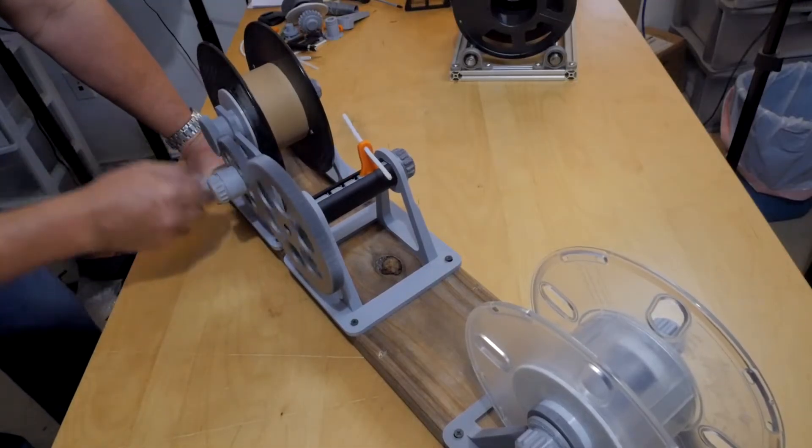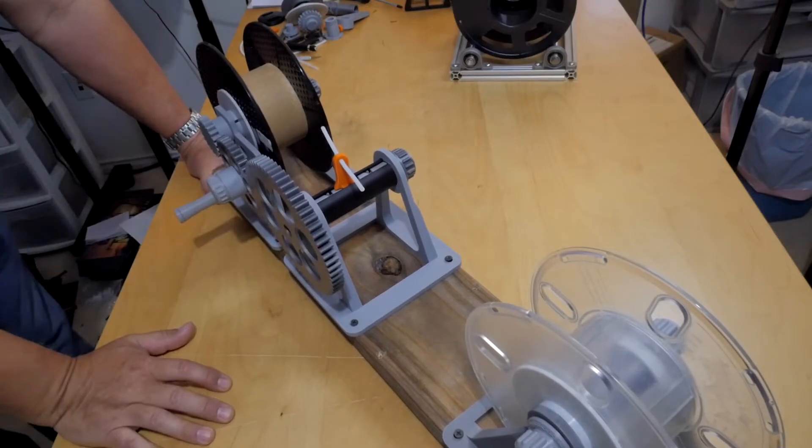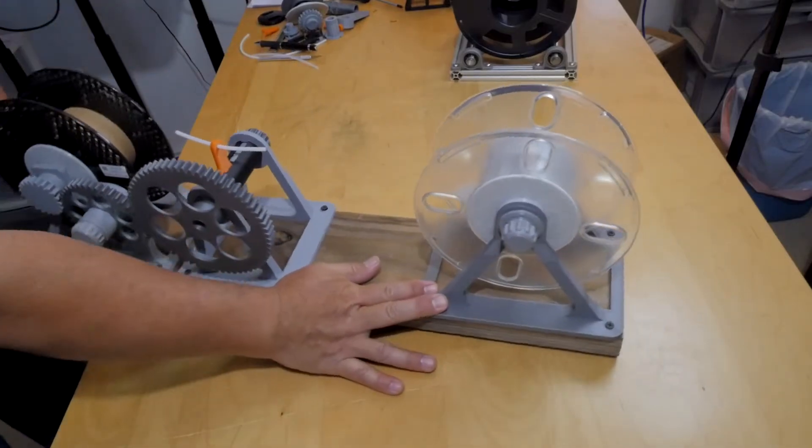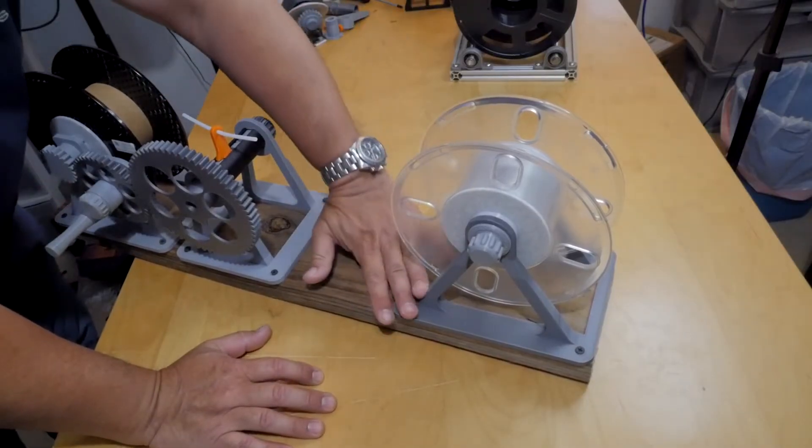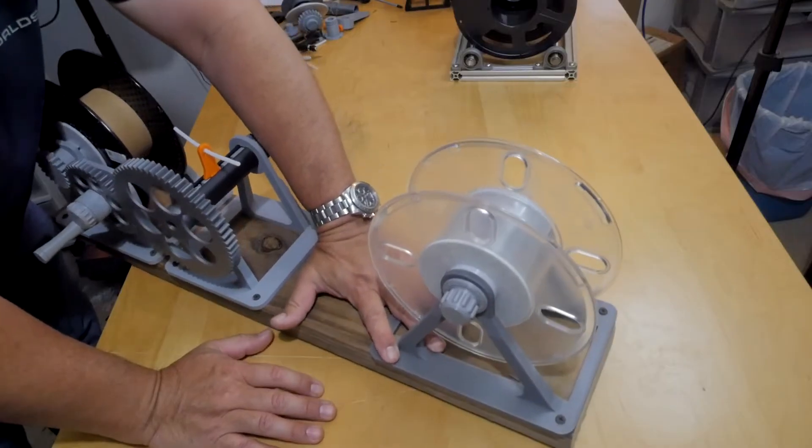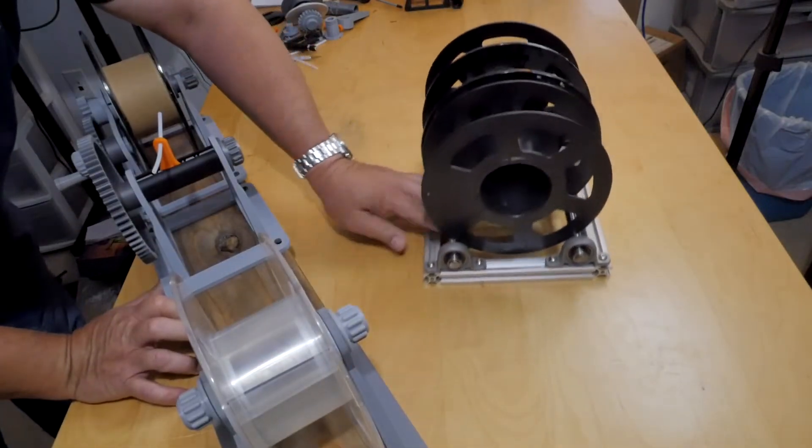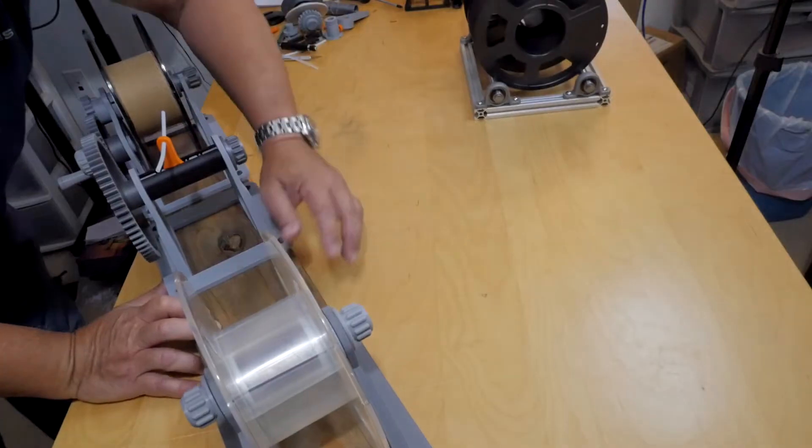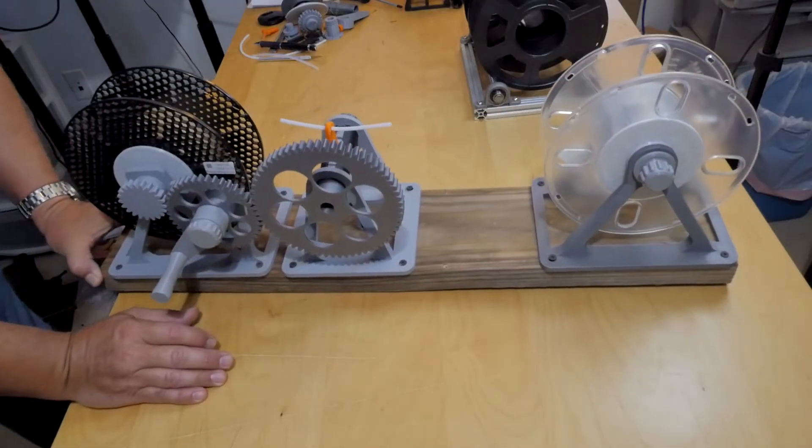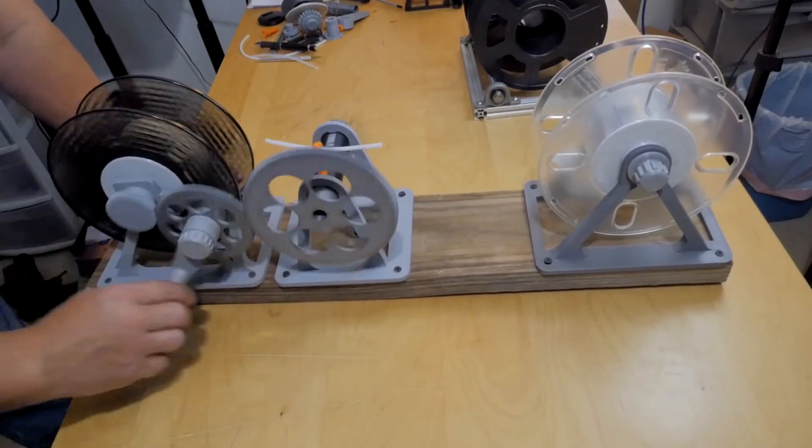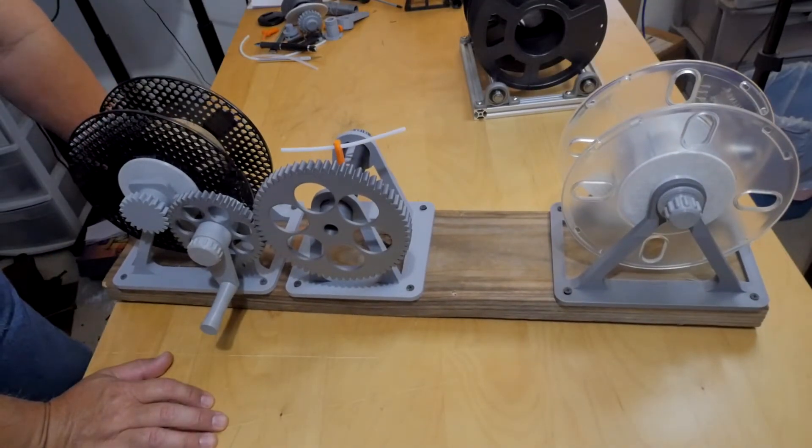Over here on the front section, this is the donor spool. You put this on and feed it through. You don't actually have to use this if you don't want - if you already have something made you can use that in place of this section.